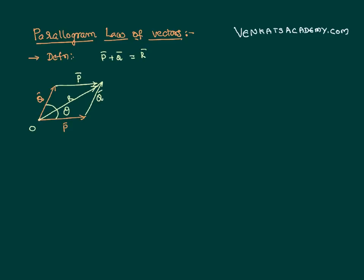We are going to prove this. My aim is to identify the resultant of the two vectors and show what is meant by the parallelogram law. To make the mathematics more comfortable, I will extend this line and draw a perpendicular from point B — this point is D — making a right angle. So we have a right-angle triangle OBD, where D is the right angle.